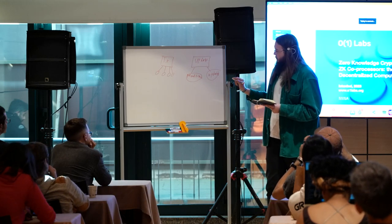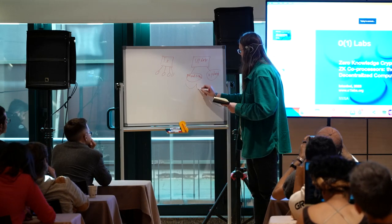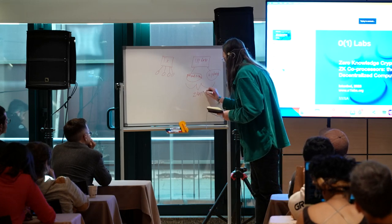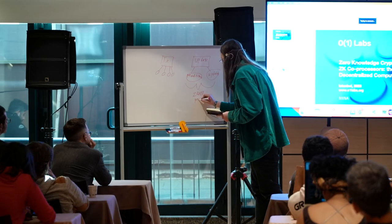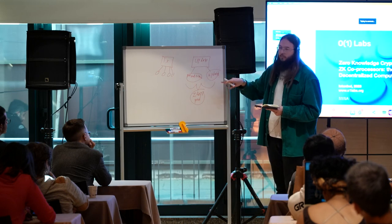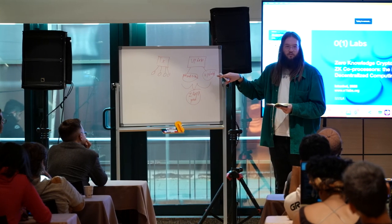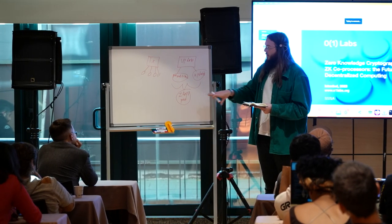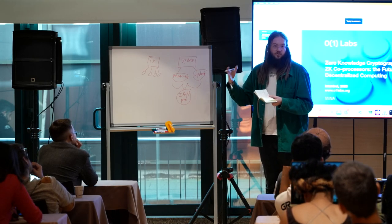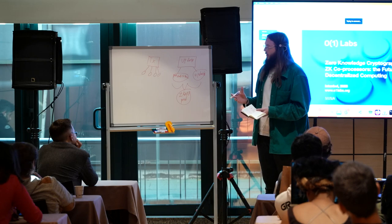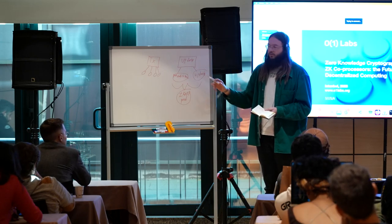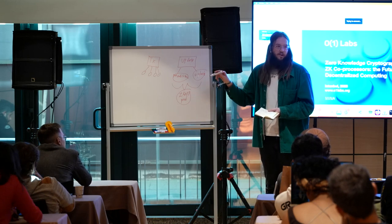We can also provide a ZK app proof attesting to all this information. The public input of this proof is the data — the preconditions and the updates we expect to happen if those preconditions are true. In other words, the proof is attesting to saying: given this constraint system written for this smart contract, if you have these preconditions that are true on-chain, then you can do these updates. That's what the proof is actually saying.